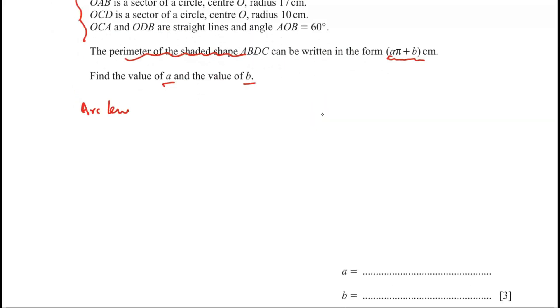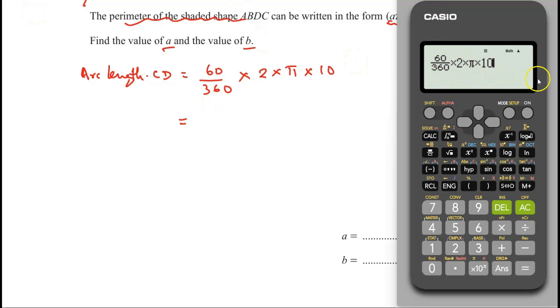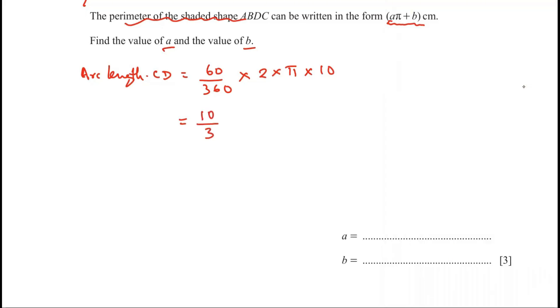Arc length of CD equal to theta which is 60 degrees over 360. And we use the formula for circumference. That's 2 times pi times radius. In that case it is 10. Here we go. Here we are finding CD. So the radius is 10. So I have typed the same calculation on my calculator. And that is equal to 10 over 3 pi. That's 10 over 3 pi.